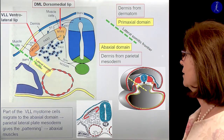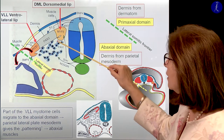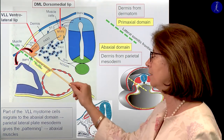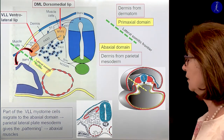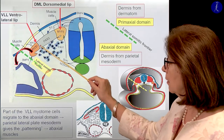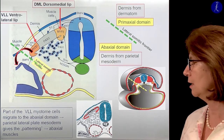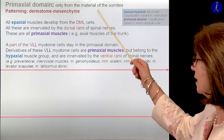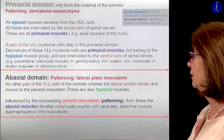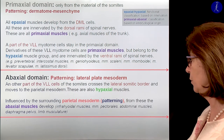The cells of the dorsomedial lip remain in the primaxial domain. The cells in the ventrolateral domain partially step over the lateral somatic frontier and invade the lateral territories — within those, the parietal mesoderm gives the patterning. The other part of those cells from the ventrolateral lip remains in the primaxial domain, where the dermis gives the patterning. In summary: primaxial domain patterning comes from the dermatome mesenchyme; abaxial domain patterning comes from the lateral plate mesoderm.